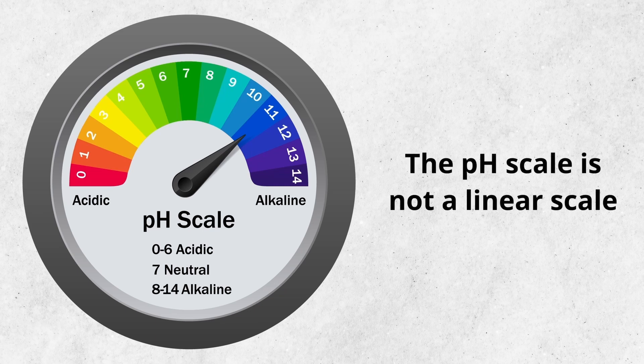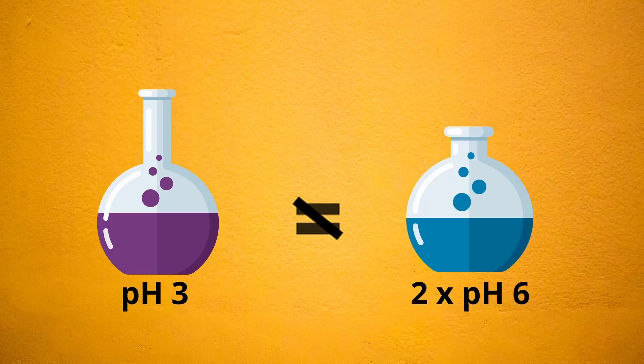Notably, the pH scale is not a linear scale, meaning that an acid with a pH of 3 is not twice as strong as an acid with a pH of 6.